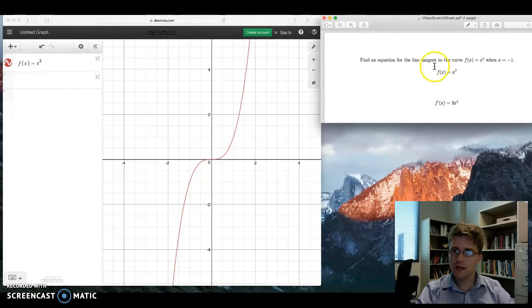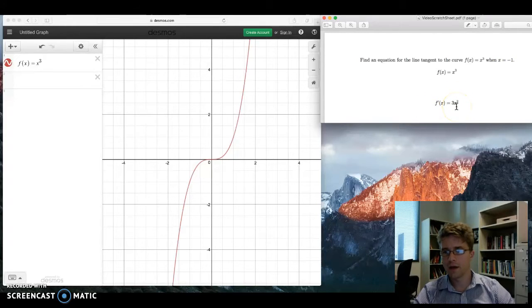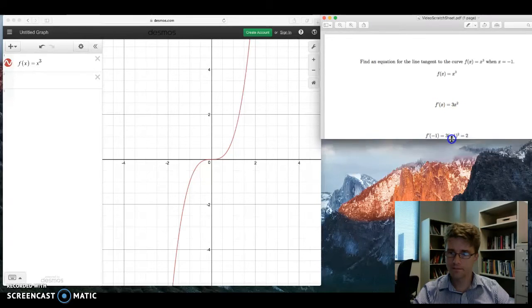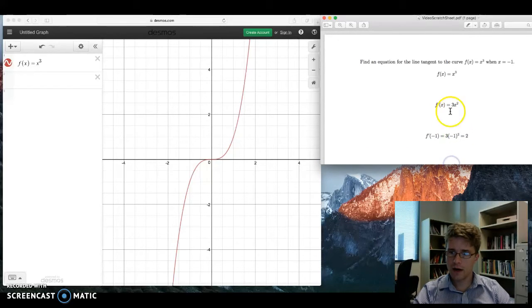And we want the tangent line when x is negative 1. So we want to plug in negative 1, x equals negative 1, to this f prime function here. So there we are, f prime of negative 1, plug in negative 1, we get 3 times negative 1 quantity squared.